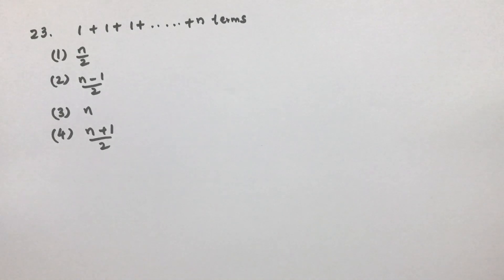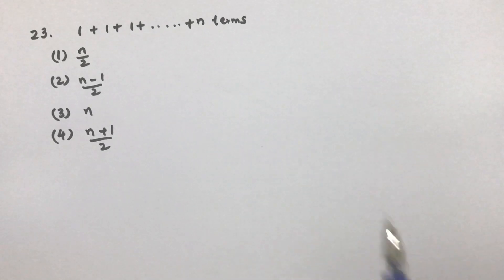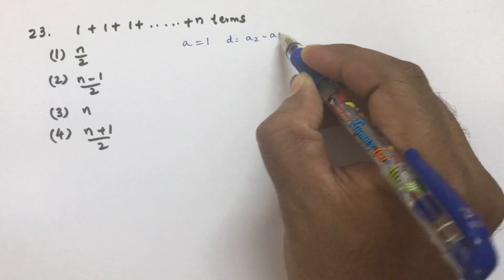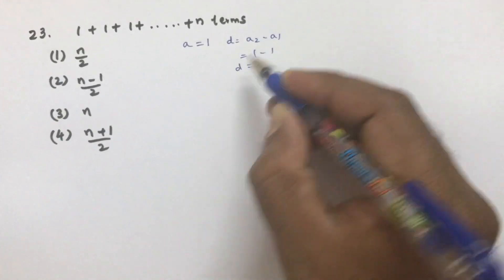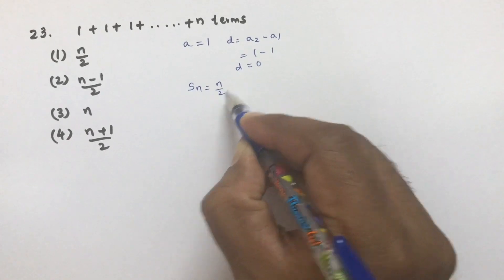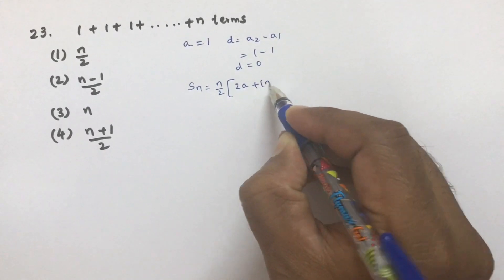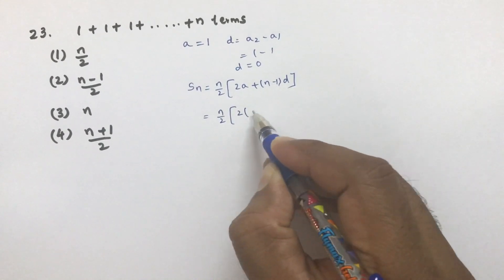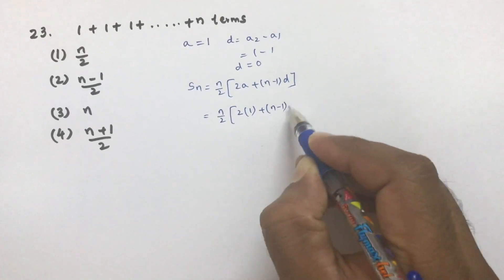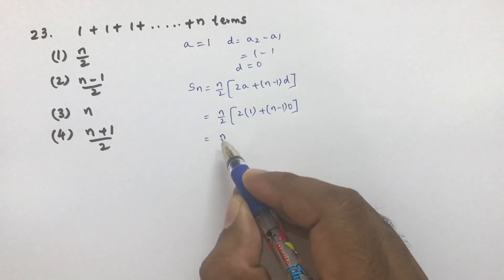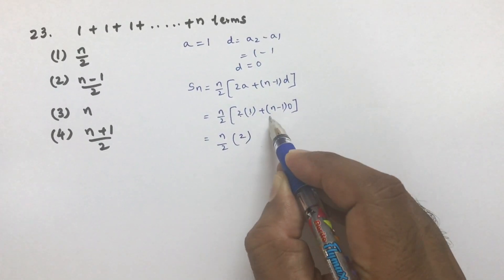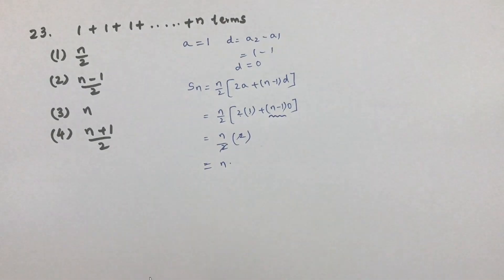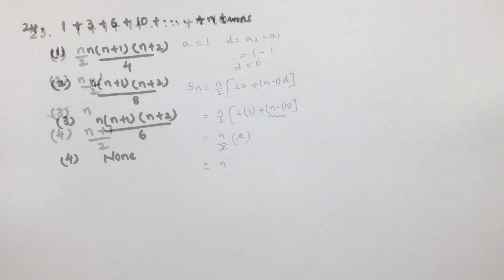Find the sum of 1+1+1+1+... up to n terms. The first term is 1 and the common difference is a2 minus a1, which is 0. The sum to n terms formula is n/2 × (2a + (n−1)d). With d=0, this becomes n/2 × 2×1 = n/2 × 2 = n. So the correct option is 3: the sum is n.